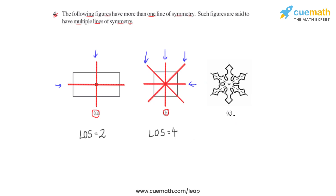Let us see what is given in figure C. In this figure it is a symmetrical figure which is being divided by different lines of symmetry. In this figure we have three lines, so in total there are three lines of symmetry for this figure.